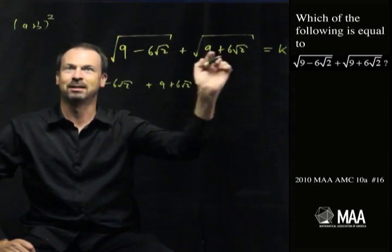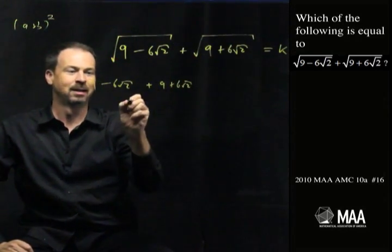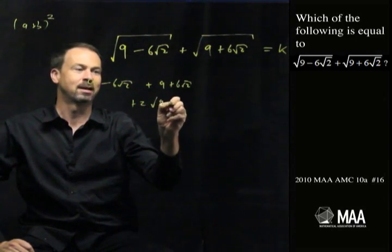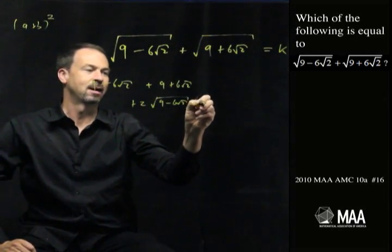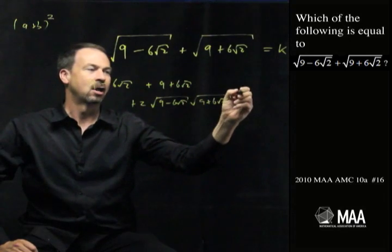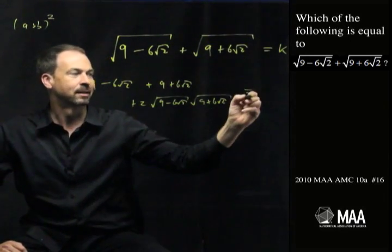But then I get the cross terms. Plus 2 times the term and the term. Plus 2 times the square root of 9 minus 6 root 2, square root of 9 plus 6 root 2. And all that's going to be K squared.